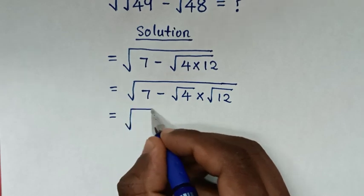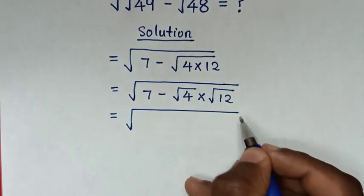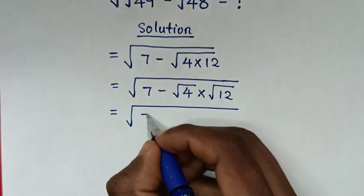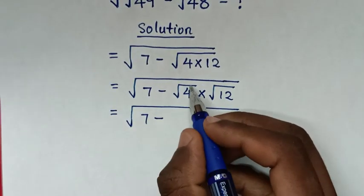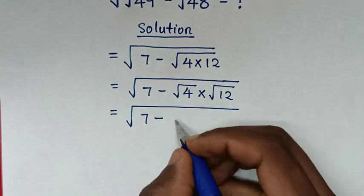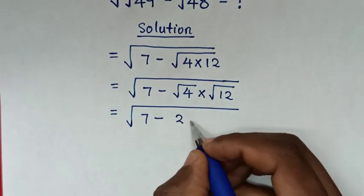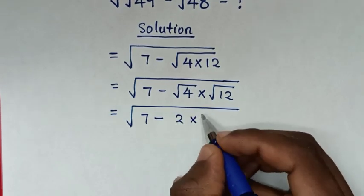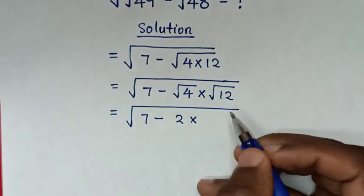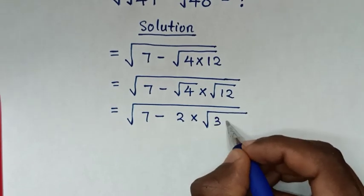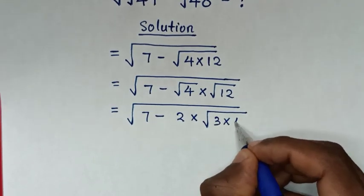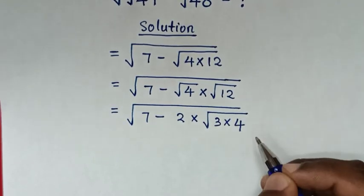Then it will be equal to square root of 7 minus square root of 4, which is 2, times square root of 12, which is the same as square root of 3 times 4.